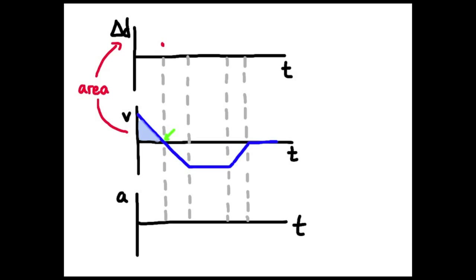Measuring the area shown in blue under the VT curve — area of a triangle — assuming I started at position zero, gives me my change in position. The red dot is the value of that area, giving my first dot on the position-time curve. Since the VT graph is a straight sloping-downward line in the first segment, I know I've got a parabola for the position-time graph. Where V equals zero at the first dashed line, the slope of the tangent on the position-time curve should also be zero — giving my first green segment, a parabola concave downwards.